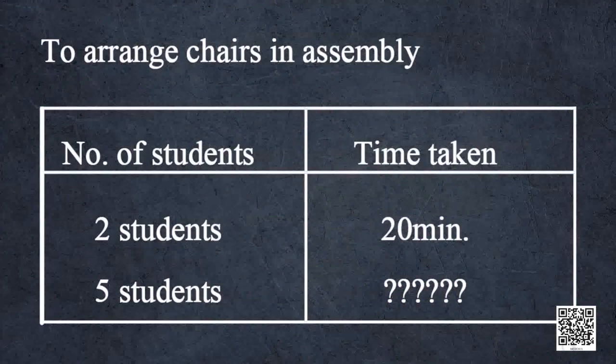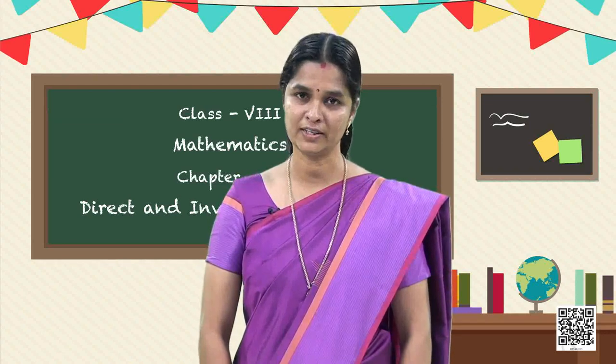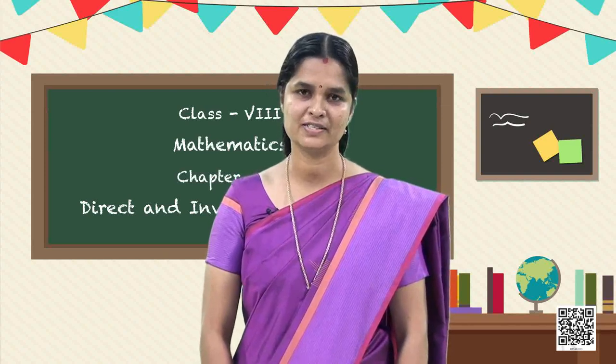Is this the case always? Let us check. Here is another situation: two students take twenty minutes to arrange chairs for an assembly. How many minutes will five students take to arrange the same number of chairs? Here, will they take more time or less? When we have more number of people to work, we need less time to complete the work. That is, when one quantity increases, the other quantity decreases. We come across many such situations in our day-to-day life.